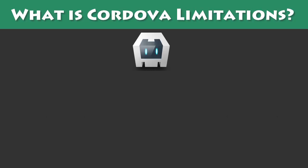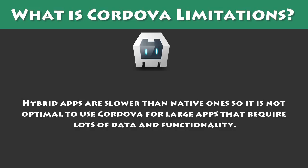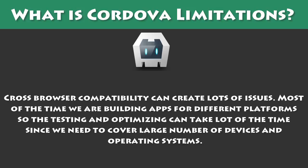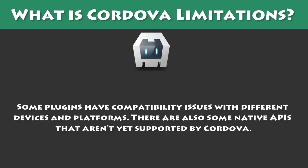What are Cordova's Limitations? Hybrid apps are slower than native ones, so it is not optimal to use Cordova for large apps that require lots of data and functionality. Cross-browser compatibility can create lots of issues. Most of the time we are building apps for different platforms, so testing and optimizing can take a lot of time since we need to cover a large number of devices and operating systems. Some plugins have compatibility issues with different devices and platforms, and there are some native features that aren't yet supported by Cordova.